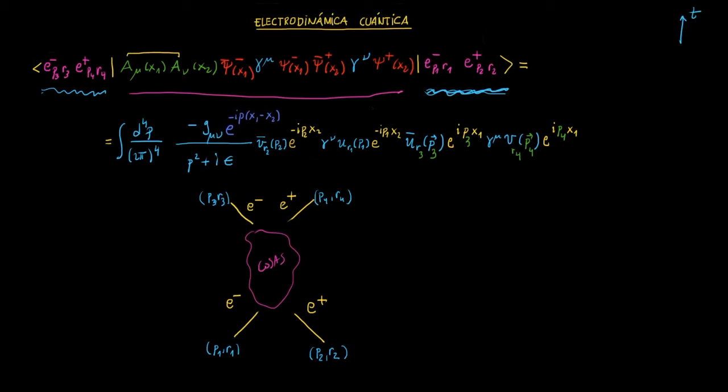Entonces fijémonos primero que aquí hay dos cosas a fijarnos. Una de ellas es que aquí pone posición 2, y aquí también, bueno, posición no, perdón, posición espacio-temporal si queréis, o sea, un punto del espacio-tiempo que le llamamos x2 y otro punto del espacio-tiempo que le llamamos x1. Entonces, ¿qué ocurre en el punto del espacio-tiempo x2? Pues lo que ocurre es que hay un psi más y un psi más lo que hace es destruir un electrón.